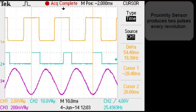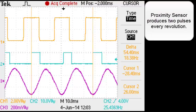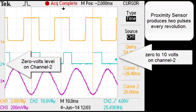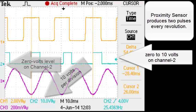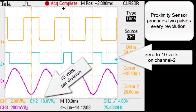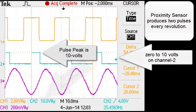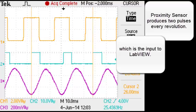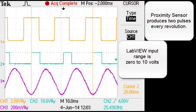The oscilloscope can also measure speed. The proximity sensor produces two pulses every revolution. We go from 0 to 10 volts on channel 2. That's the 0 volts level on channel 2, set at 10 volts per division. Therefore, the pulse peak is 10 volts, which is the input to LabVIEW. LabVIEW input range is 0 to 10 volts.